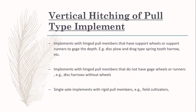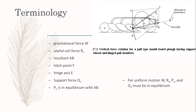In the case of vertical hitching of a pull-type implement, there is a horizontal location of the hitch point as well as a vertical location — at what height your vertical hitch point should be located. We are going to discuss some terminologies: the gravitational load is W, the useful soil reaction is Rv which you can see here, and the resultant of both Rv and W is AB. This G point is the center of gravity of the implement. When you read this, the implement is hinged to pull members and support wheels or runners in those implements where wheels are provided.